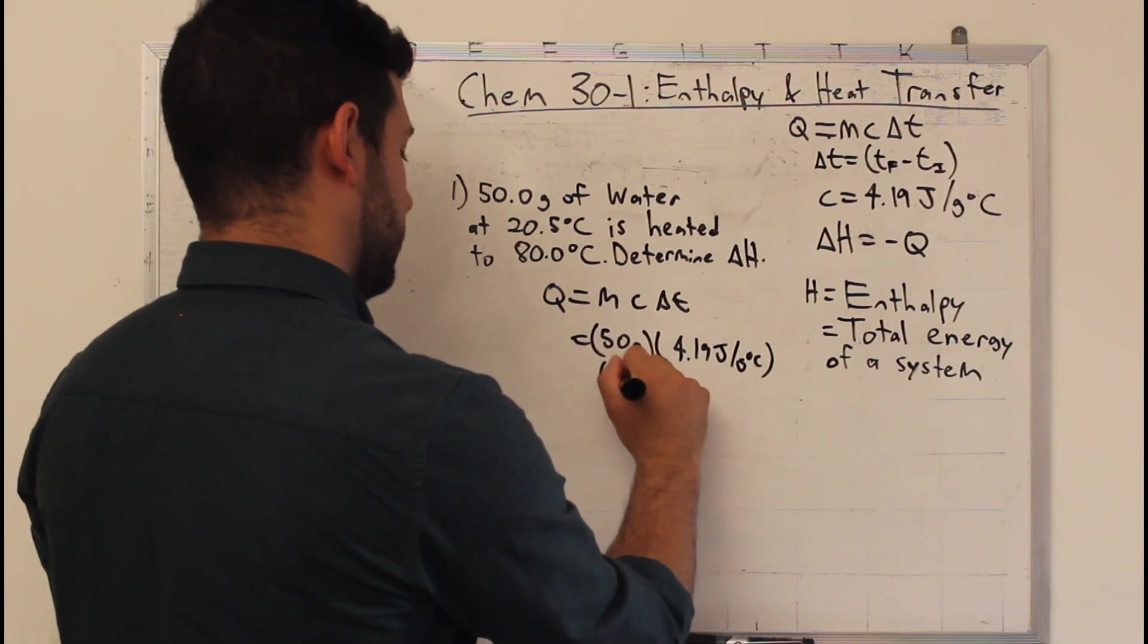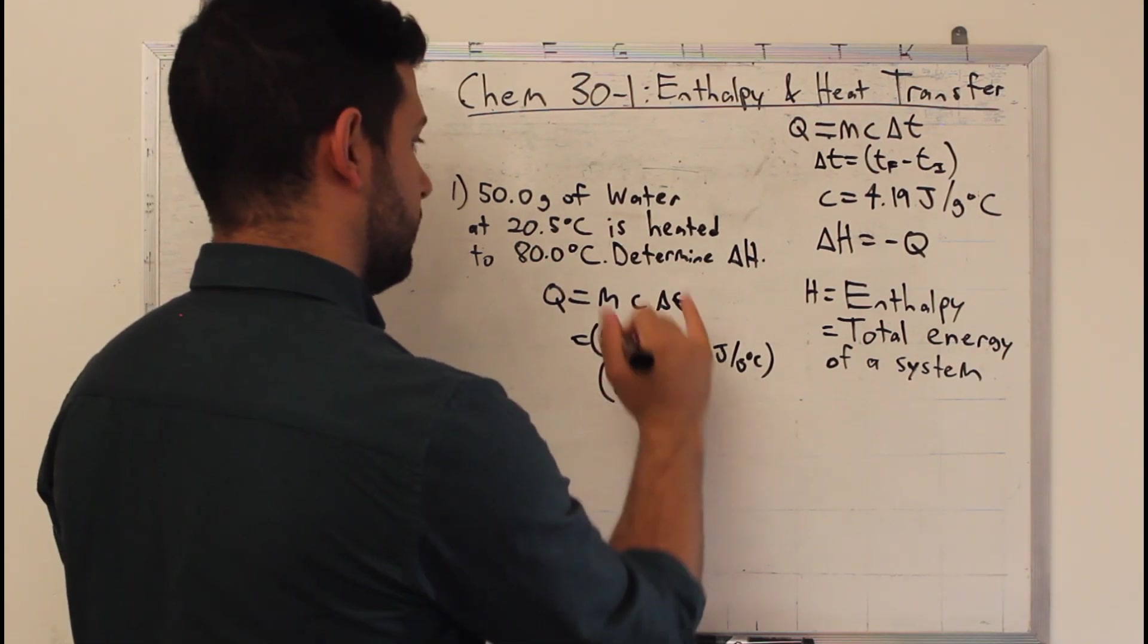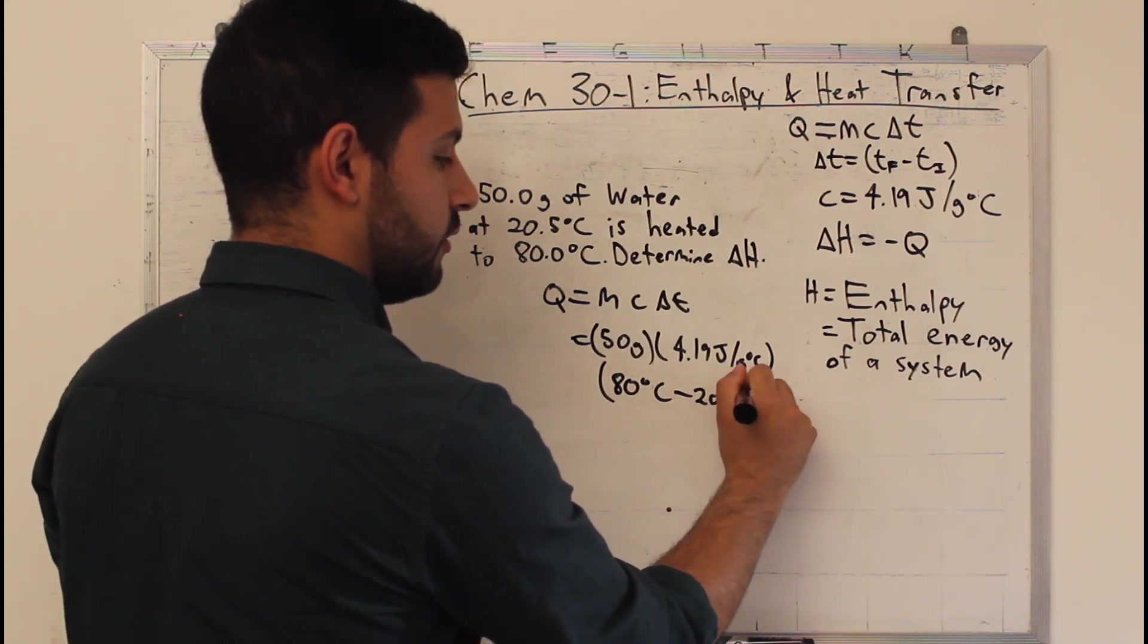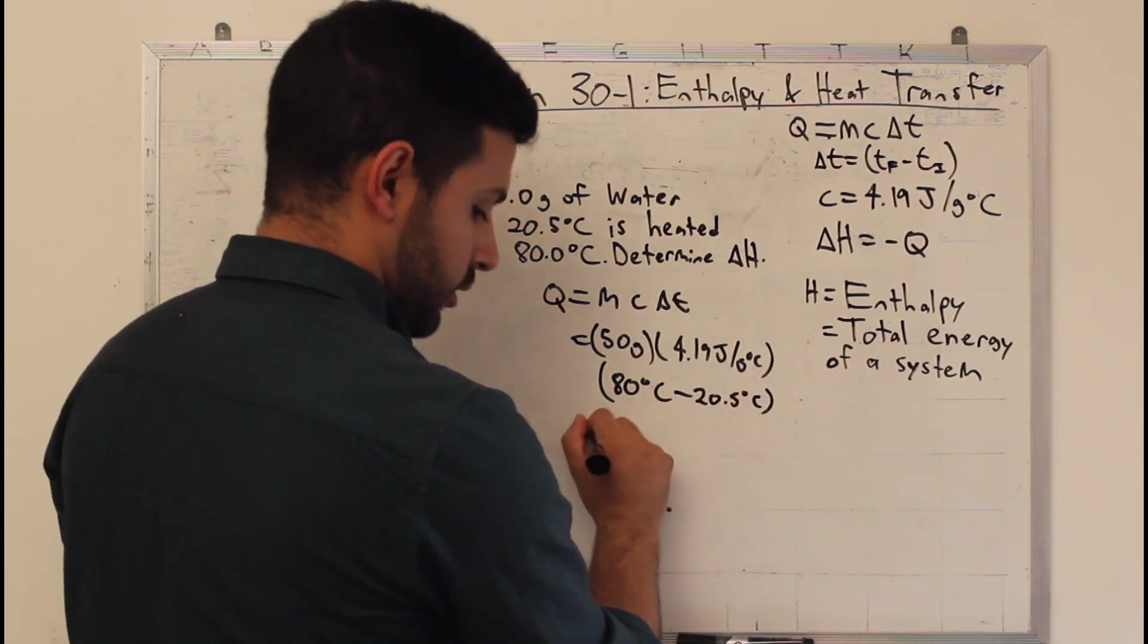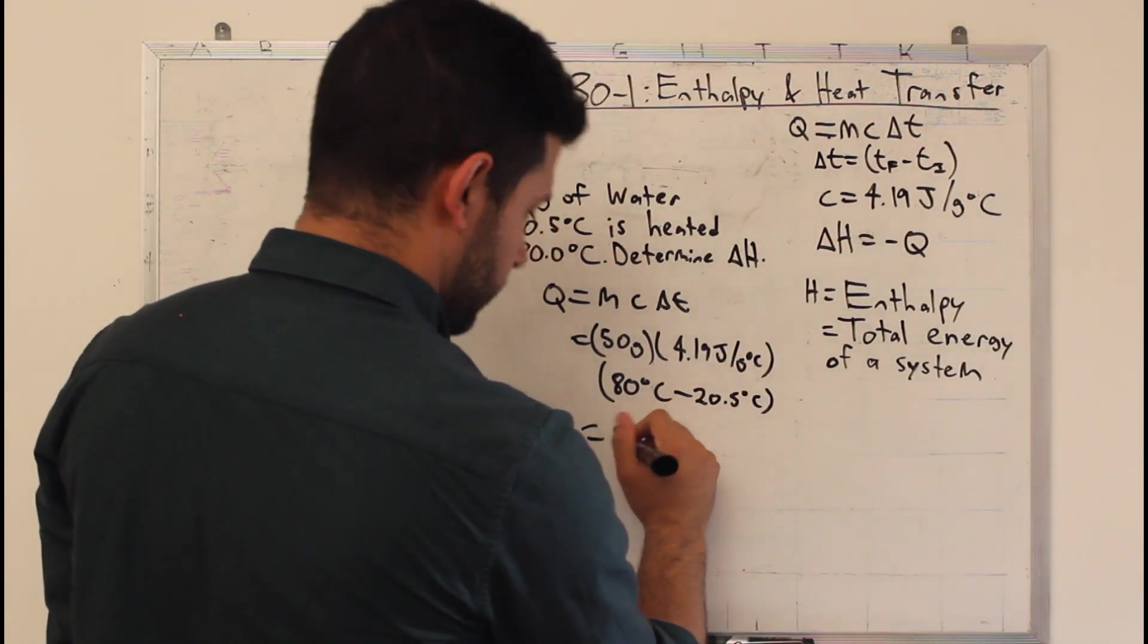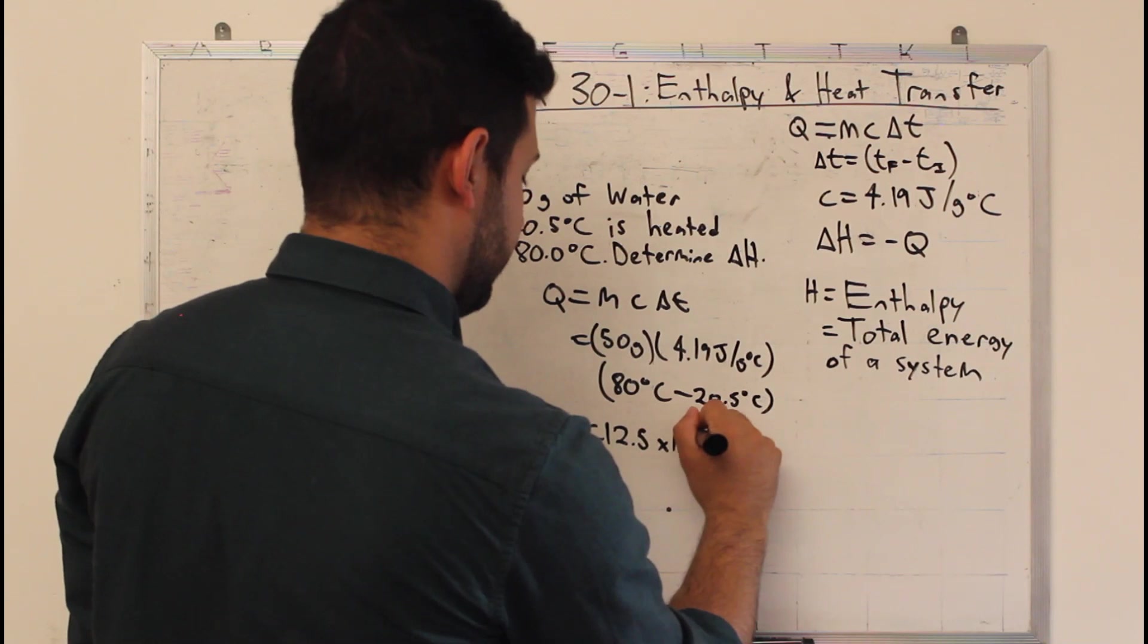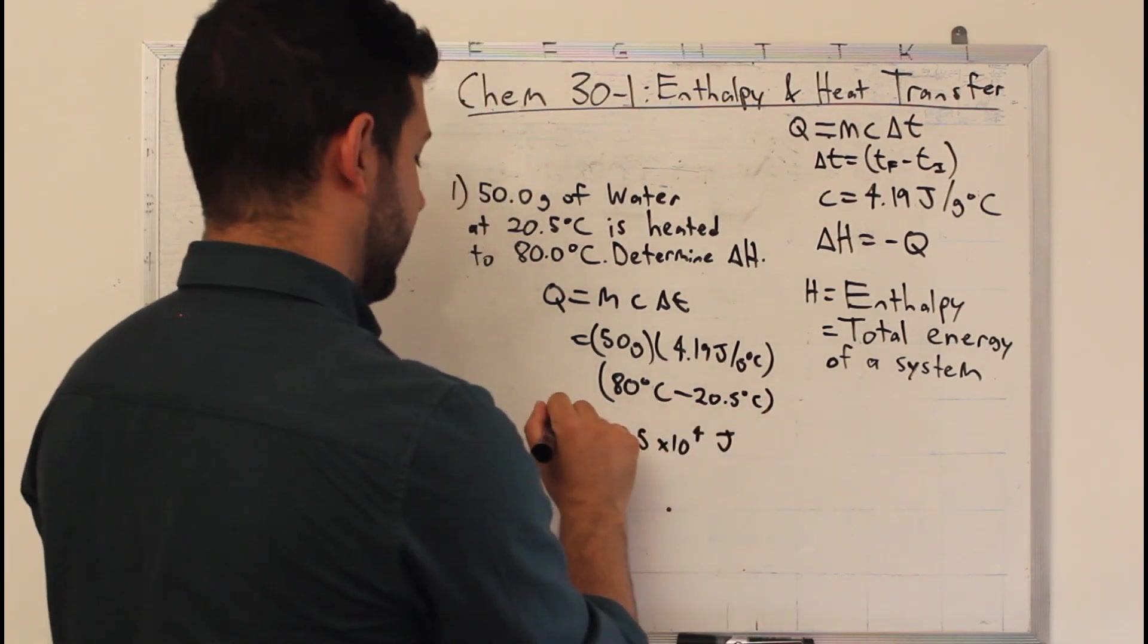Final temperature, 80 degrees Celsius. Minus the initial temperature, 20.5 degrees Celsius. And we got 12.5 times 10 to the 4 joules. That's Q.